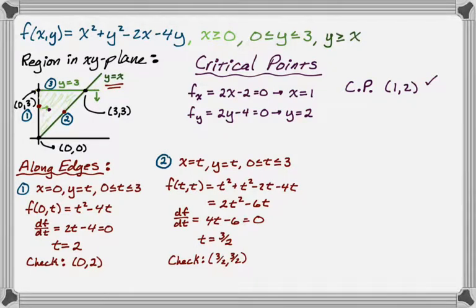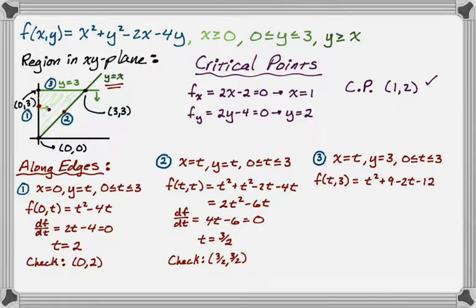And we're going to do it one more time. So along this last one, which is y = 3. So I'm going to let x = t. y just has to be 3. And then x has to be anything from 0 to 3. So we have this. Let's parameterize our surface to get the trace. So it'll be t² + 9 - 2t - 12. So overall, t² - 2t - 3. You actually could have found the derivative from the previous step. I don't know why I simplified that. Let's find df/dt.